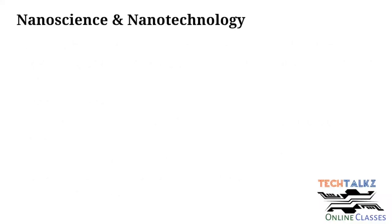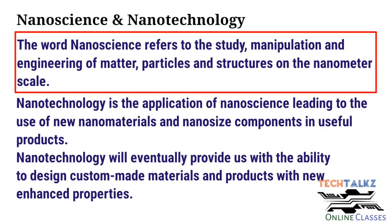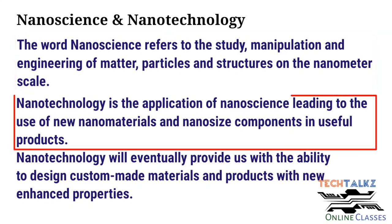Let us see the difference between nanoscience and nanotechnology. Nanoscience is the study of nanomaterials, their properties and related phenomena. At the same time, nanotechnology is the application of nanoscience to produce devices and products.